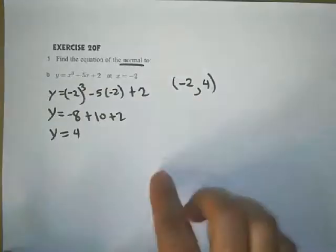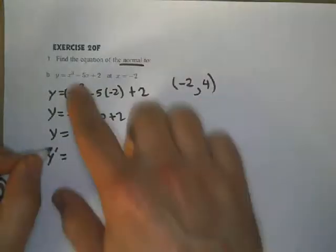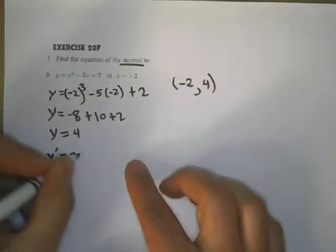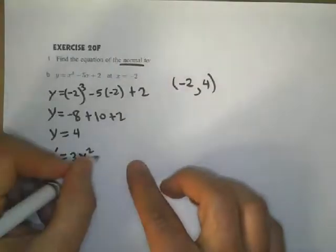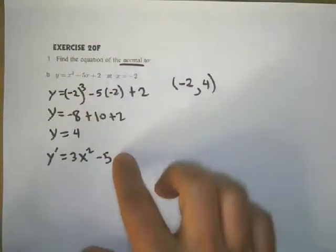Now I need to take the derivative. The derivative of this function is going to give me 3x squared minus 5. Nothing happens to the 2.